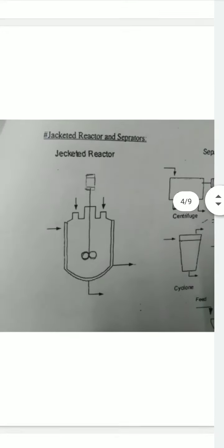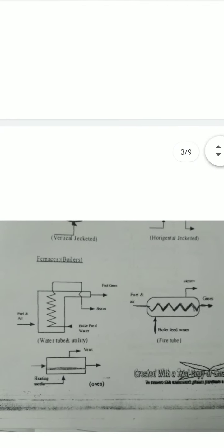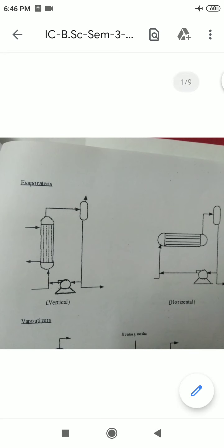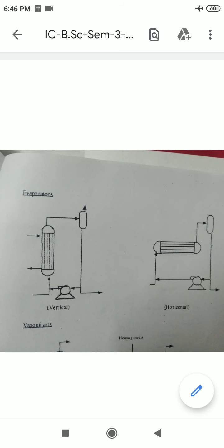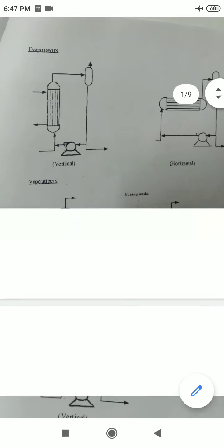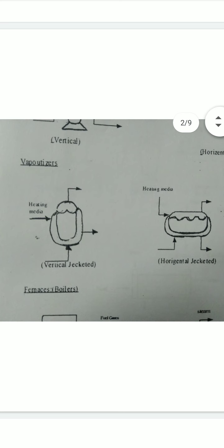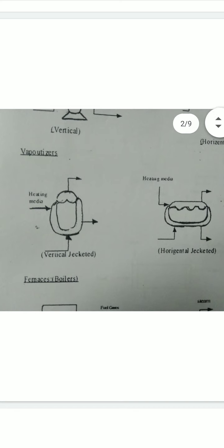Let us repeat from the beginning. We start from the evaporator — both vertical and horizontal types are shown. The difference between them is just the orientation of the tank drawn — vertical and horizontal. Similarly, the jacketed vaporizers are shown with the same approach — vertical jacketed and horizontal jacketed, with the outer layer representing the jacket.